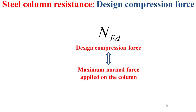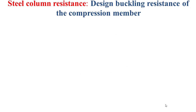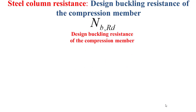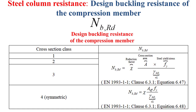As explained in a previous video, the design compression force NEd can be simply seen as the maximum normal force applied on the column. For the design buckling resistance NbRd, it is determined based on the table shown in this slide. For cross-section classes one, two, and three, NbRd is expressed as the reduction factor chi multiplied by the cross-section area A multiplied by the steel yield stress fy, divided by γM1, where γM1 is equal to one.